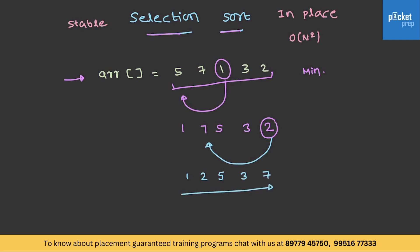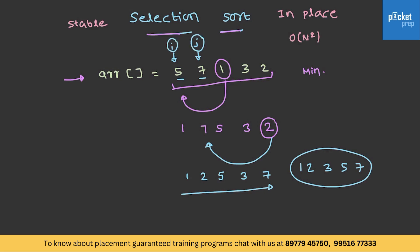The procedure followed is: initially we have a pointer called i, and another pointer j pointing to the next position, scanning the values at both indexes. If the value at j is greater than the value at i, nothing happens; otherwise it moves further. If it is less, both positions are swapped. In this way, j moves till the end of the array, and in the next iteration, since the minimum element has moved to the zeroth index, i moves to the next location and j starts from the respective position.